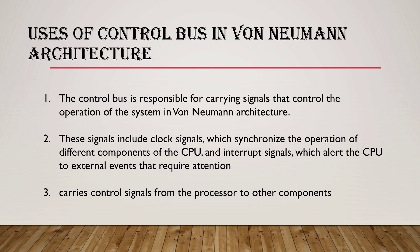The Control Bus is responsible for carrying signals that control the operation of the system in Von Neumann architecture. It includes clock signals, which synchronize the operation of different components of the CPU, and interrupt signals, which alert the CPU to external events requiring attention. It also carries control signals from the processor to other components.